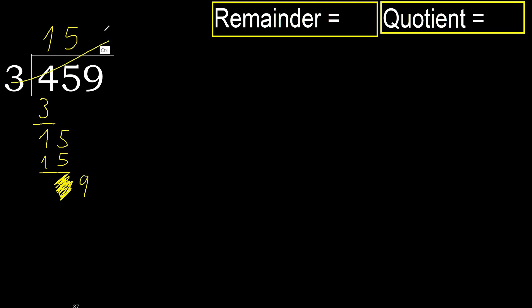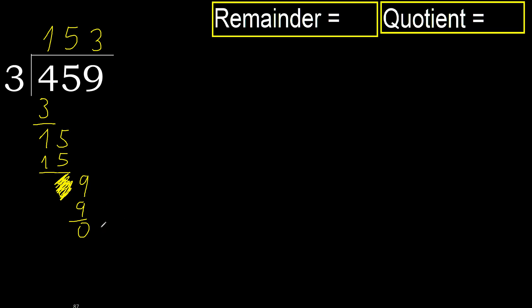Ok, bring down 9. 3 multiplied by 3 is 9. Subtract: 9 minus 9 is 0. Next, that is not a number, therefore finish it. 459 divided by 3 is 153. Ok, thank you.